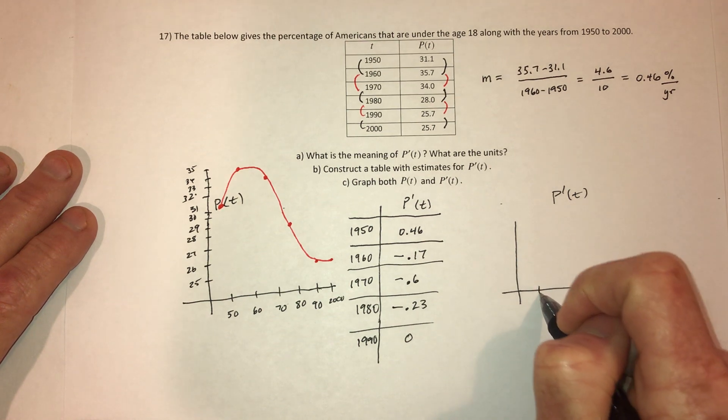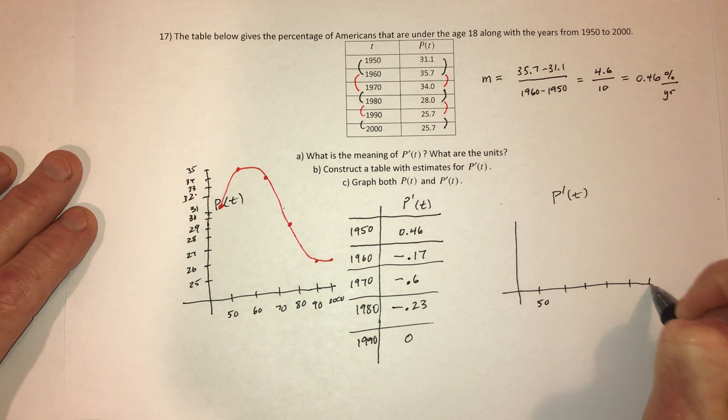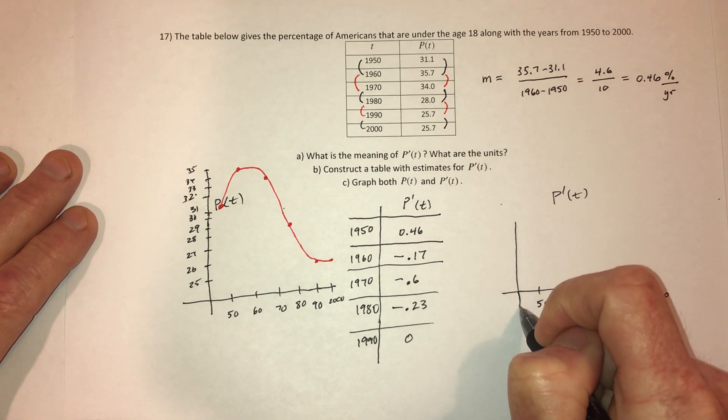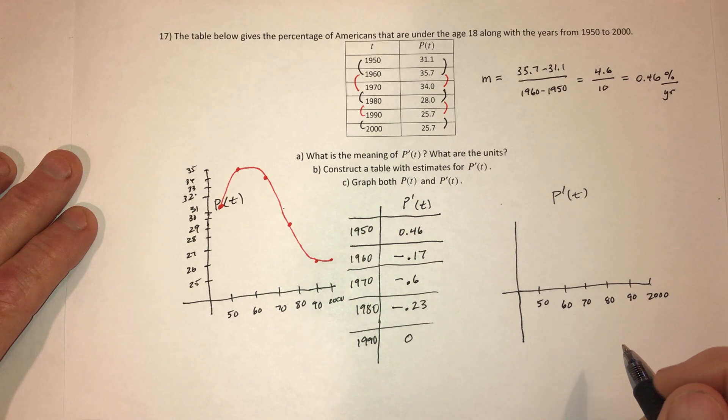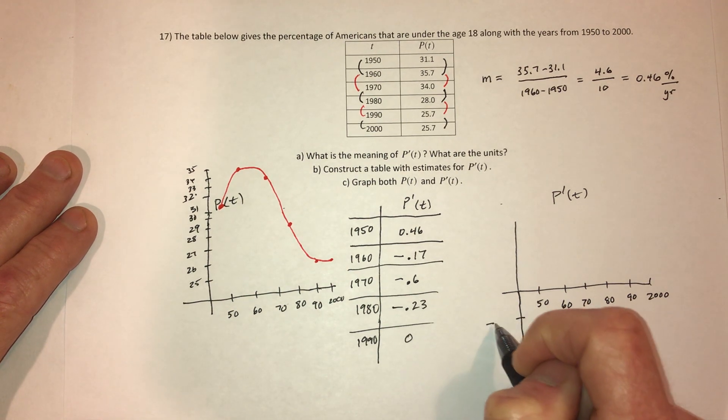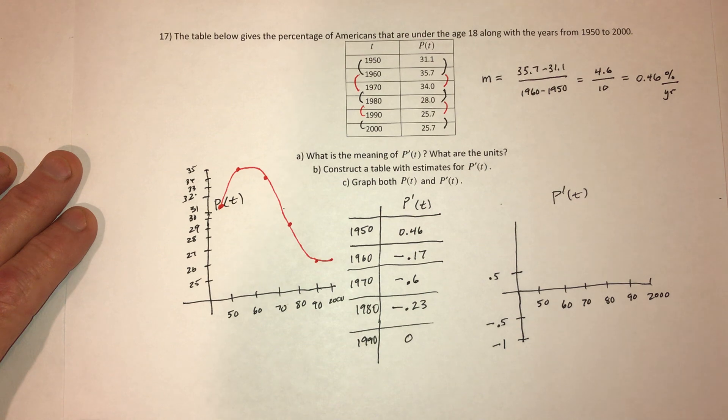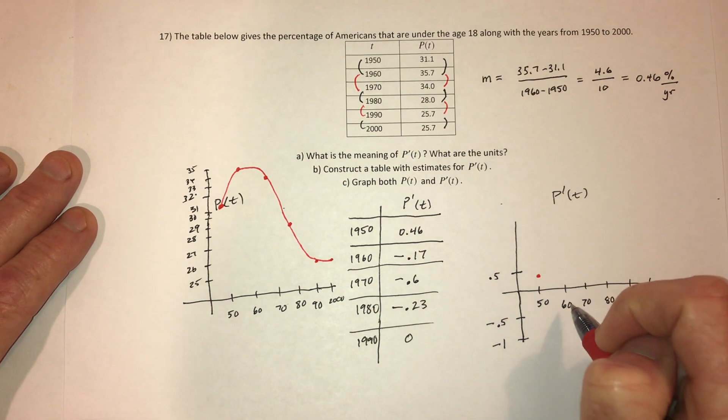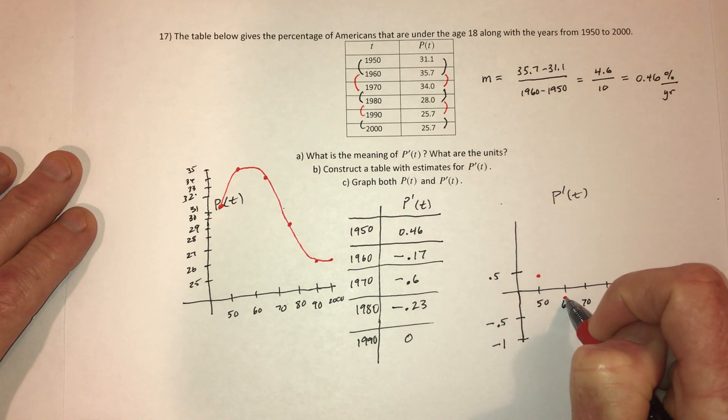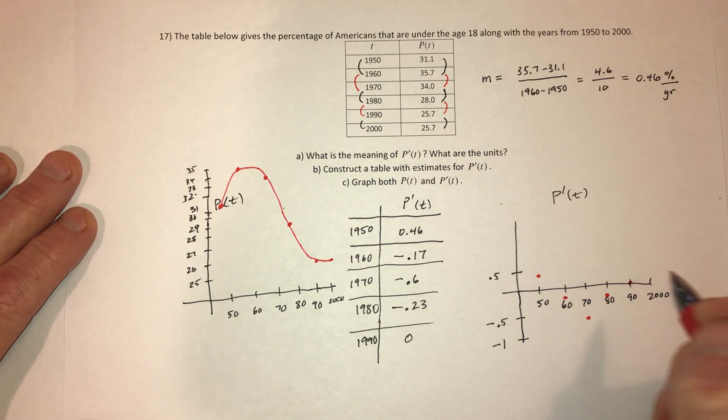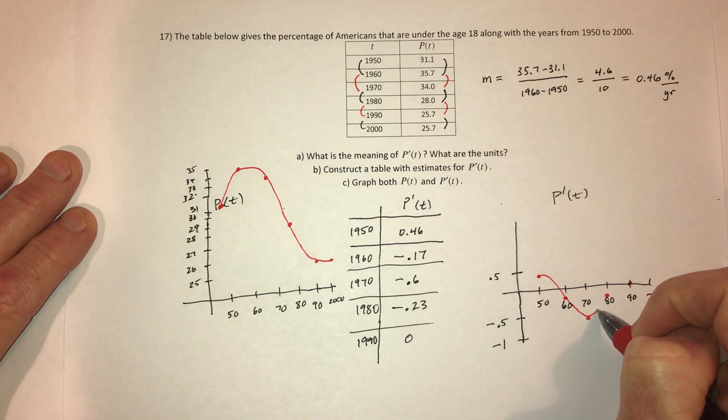Then for this one. So again, these are going to be the years, the 50s, 60s, 70s, 80s, 90s, and 2000. And then we've got some negatives and positives. So how about if this is negative 0.5, negative 1, positive 0.5. So the first one was 0.46, approximately right here, a negative 0.17, that's pretty small. And then in the 70s, it's a negative 0.6, a negative 0.23, and then 0. So this one would go about like this.